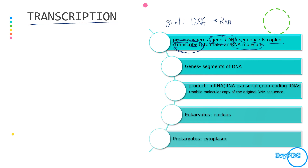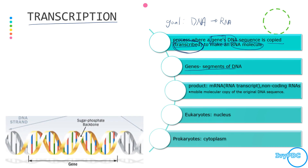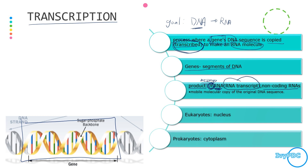When we say gene, this refers to a segment of DNA, or just a part of a whole DNA sequence. There are two products in the transcription process: mRNA and non-coding RNAs. The 'M' in mRNA stands for messenger, because these RNAs carry the message from the DNA to the next step. mRNA is also called the RNA transcript and is described as a mobile molecular copy of the original DNA sequence.